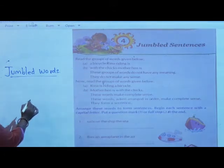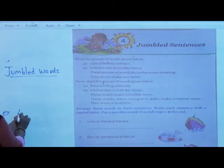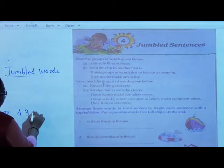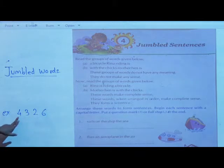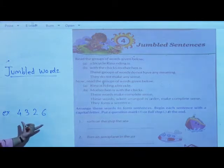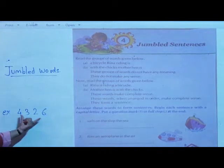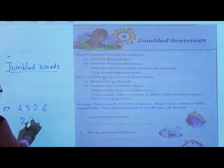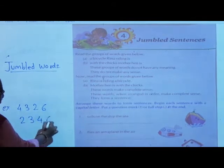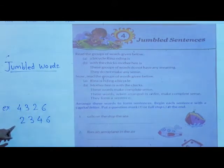For example, in numbers: 4, 3, 2, 6. Now you can see these numbers — 4, 3, 2, 6. Is it in serial order? No, it is not. So what will come serially? 2, 3, 4, 6. In this same way, your words are also jumbled.